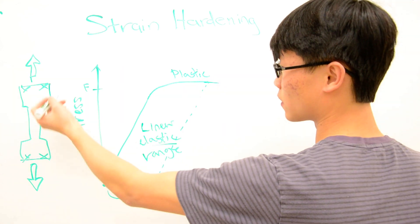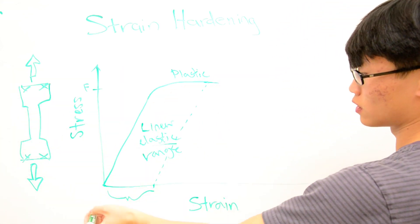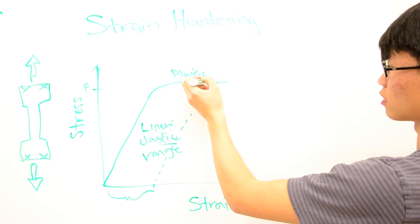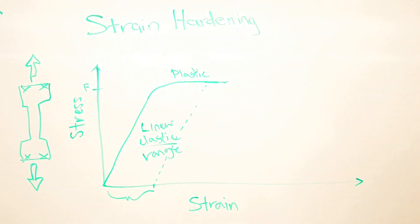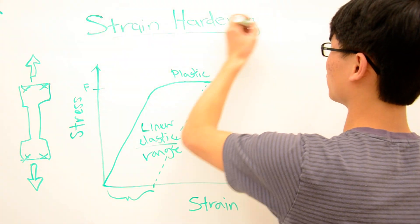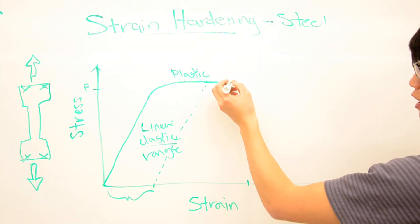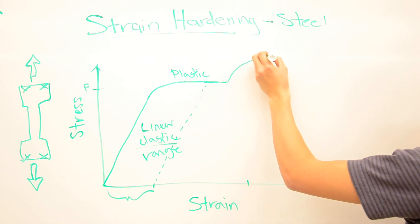So material like steel, if you do this test, it will behave a lot like this, and it'll have a very long plastic range where it's just getting longer and longer. But then something weird happens where it has strain hardening. So if we look at steel, after a certain distance out here, it suddenly comes back up again.